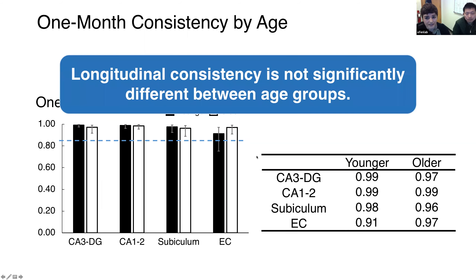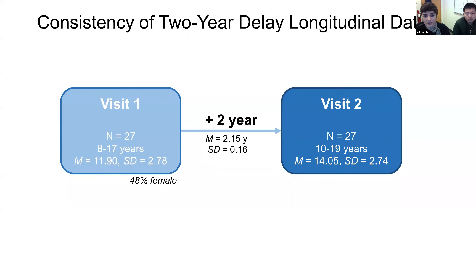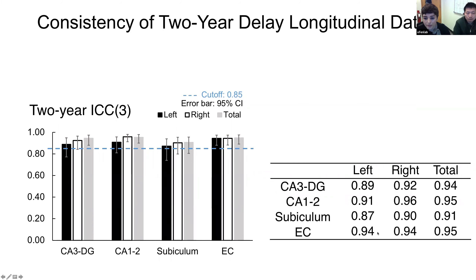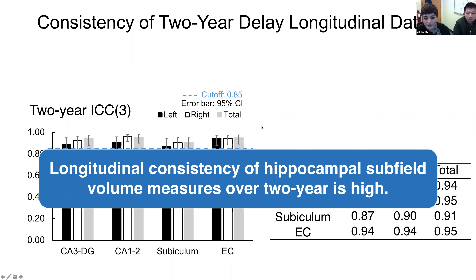In addition to the one-month delay, we calculated ICC measures with a two-year delay. With 27 participants returning after two years, we collected T2 measures and calculated ICC across subfields using exactly the same procedure. The only difference between the two samples is the effect of development. Again, all measures are above our 0.85 cutoff, and confidence intervals overlap across hemispheres and subfields, meaning longitudinal consistency of hippocampal subfield volume measures over two years is also high.